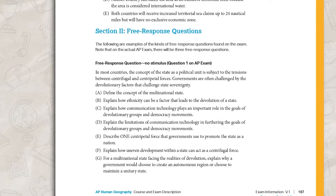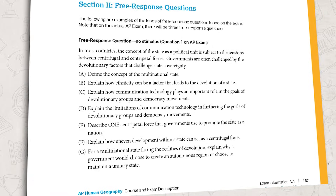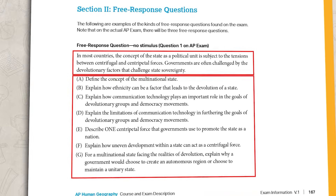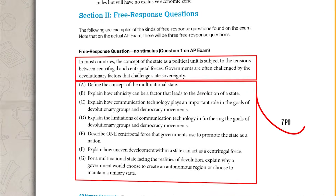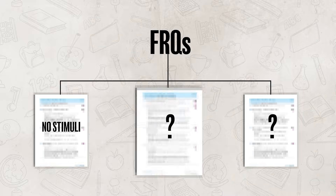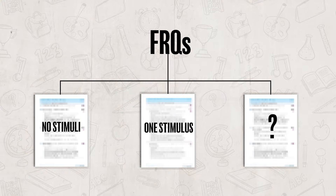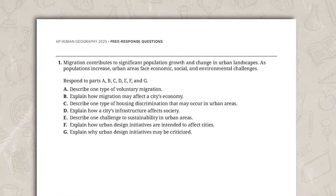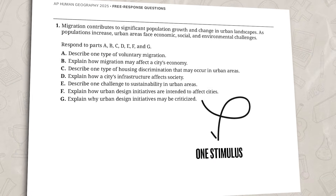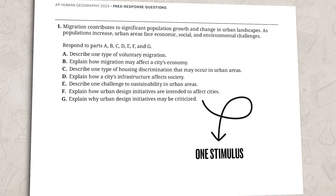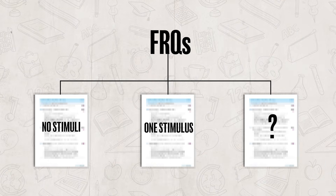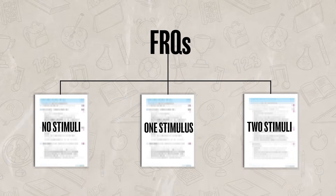Right here, you can see an example of what an FRQ with no stimuli might look like. Notice there is a prompt, then you have seven parts to the question, each part worth one point. The second type of FRQ includes one stimulus — it still has seven parts, but comes with a stimulus needed to answer some or all parts. Then there is the last type of FRQ which has two stimuli, and again, there are still seven parts.